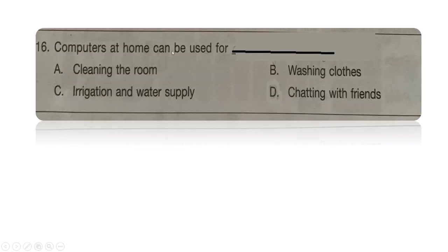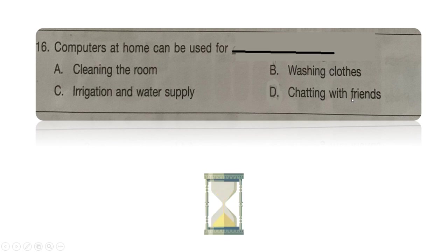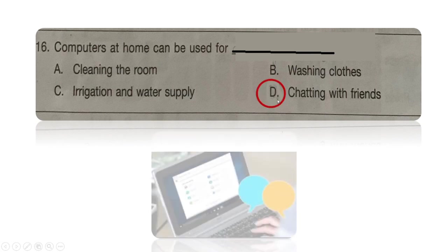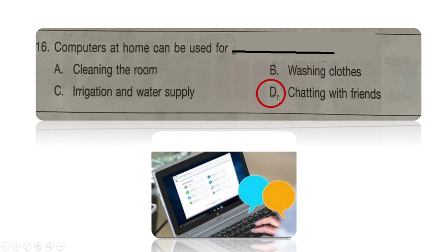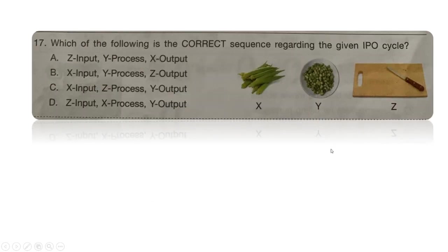Next question: computers at home can be used for — option A: cleaning the room, option B: washing clothes, option C: irrigation and water supply, or option D: chatting with friends. Options A, B, and C are manual work. The right answer is option D: chatting with friends.